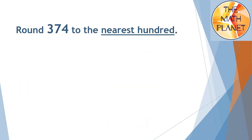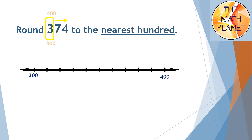Let's round 374 to the nearest hundred. First, we will circle the hundreds digit, which is 3. Next, we need to replace all the digits to the right side by zeros, so my lower benchmark will be 300. The upper benchmark will be 100 more because I'm rounding to the nearest hundred, so the upper benchmark will be 400. Here's my number line with the lower and upper benchmarks — next I will locate my halfway number.